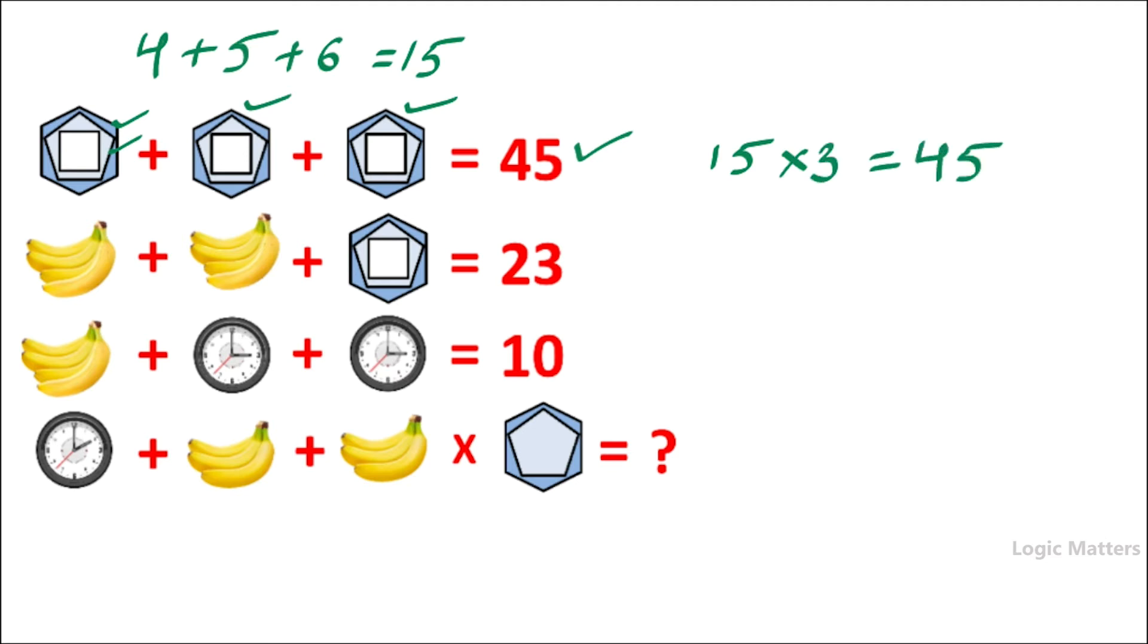Similarly, now try to resolve equation number two. If you clearly observe, here we have four bananas and here also we have four bananas. So four bananas times two plus we know the value of this, right? That is 15. So the answer is four times two is 10, 10 plus 15 is nothing but 23, and we have 23 here so this is also correct.